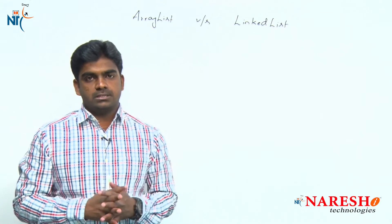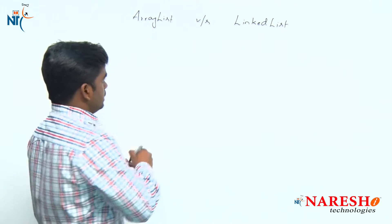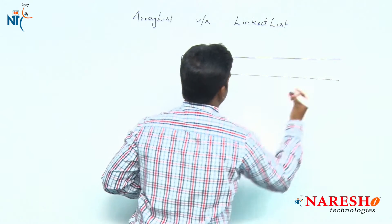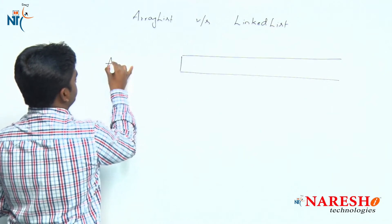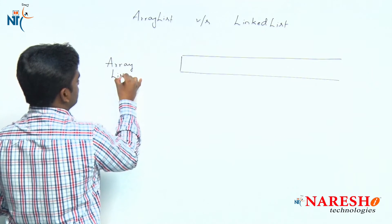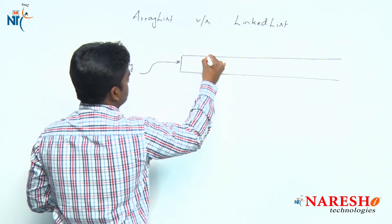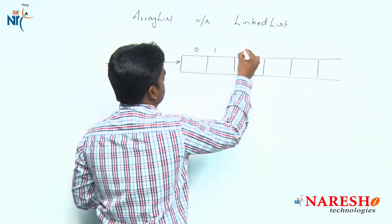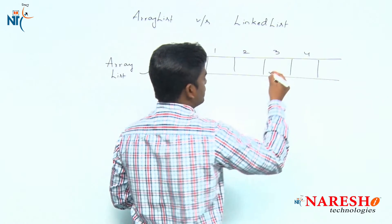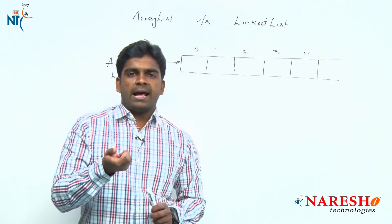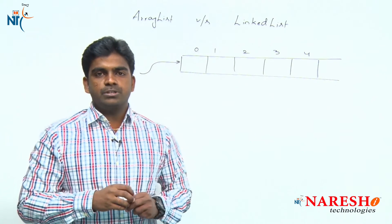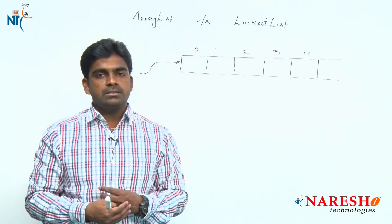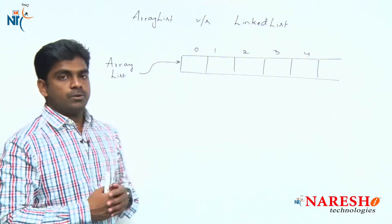In ArrayList, elements are stored in an array format. We can access elements using their index, and because of index-based access, processing the elements is much faster in ArrayList when compared with LinkedList.